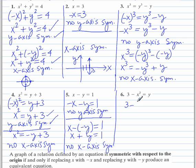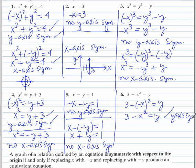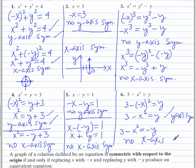Let's do number 6. Replace x with negative x, and yes, we do end up with the same equation. So there is y-axis symmetry. And to check for x-axis symmetry, replace y with negative y — there is no x-axis symmetry.